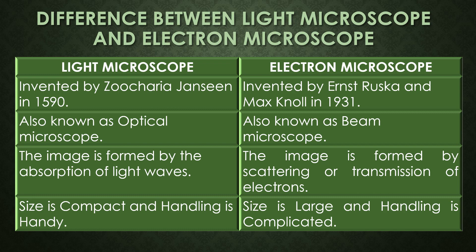The size of the light microscope is compact and handling is easy. For the electron microscope, the size is large and the handling is very complicated.